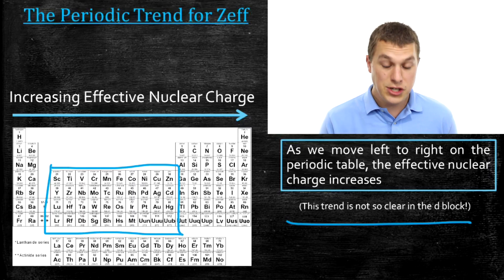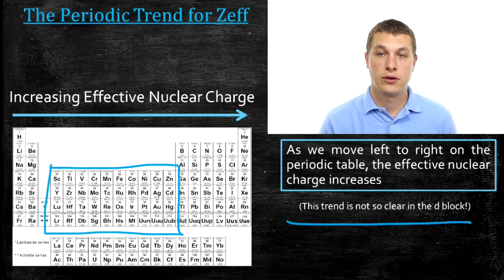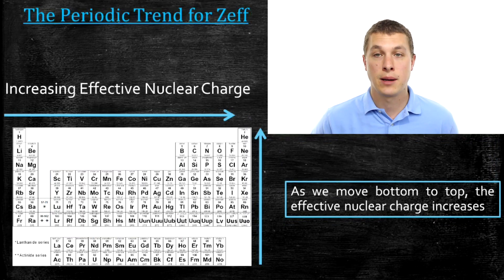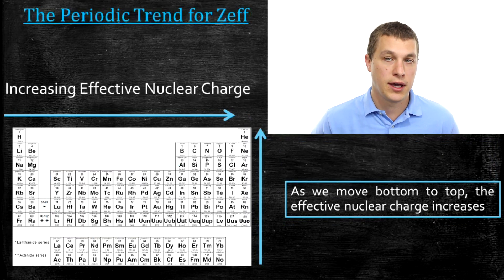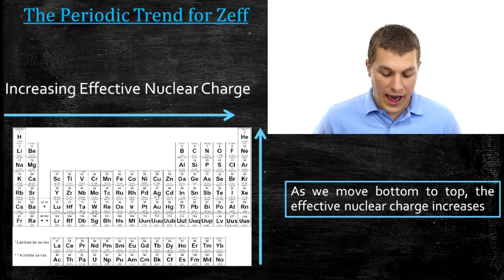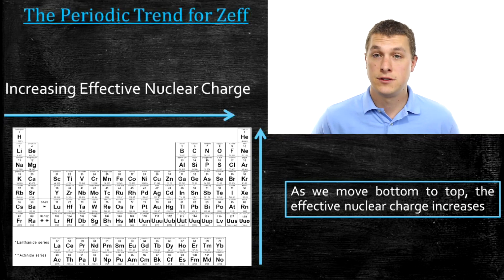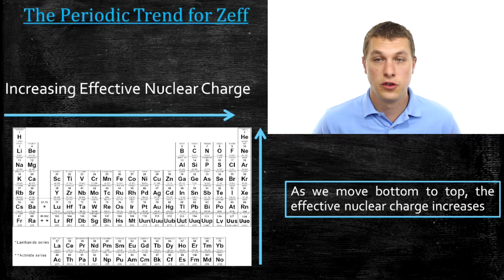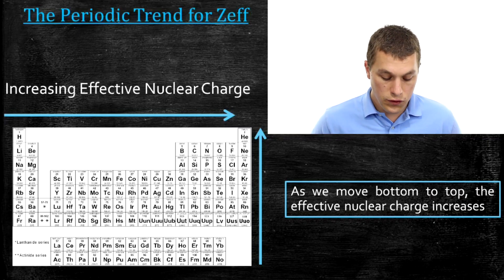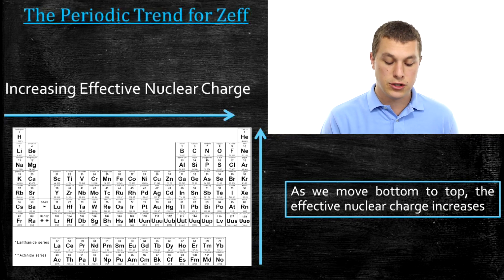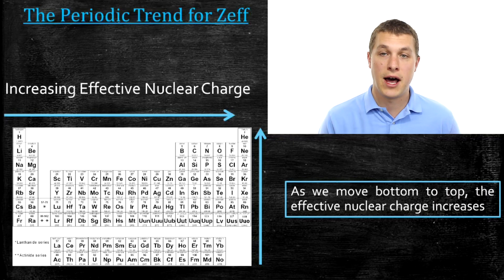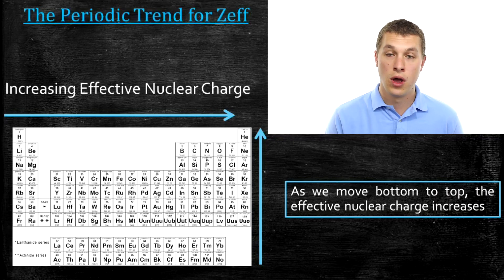In general, our effective nuclear charge increases as we go left to right, and it also increases as we go from bottom to top. As I go from bottom to top, my valence electrons are getting closer to my protons, and that means they feel more of a charge. So the blue arrows on the periodic table show where effective nuclear charge is increasing.